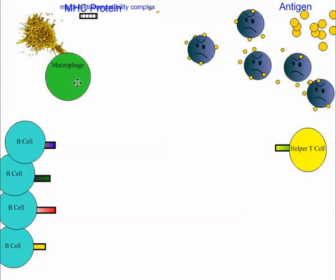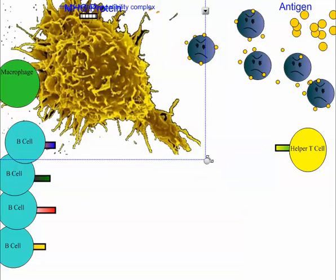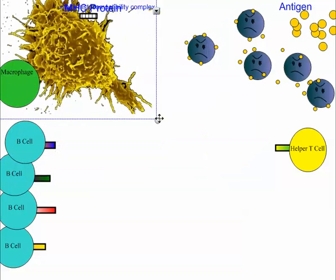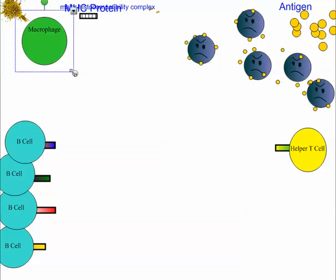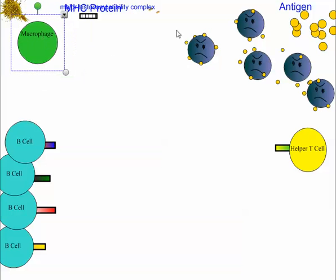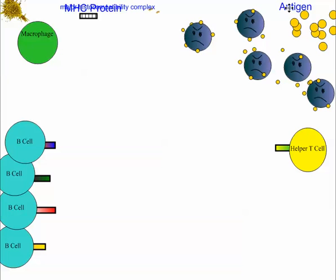This green guy here is going to represent a macrophage. Macrophages are big giant white blood cells — kind of like a pac-man that goes around and chomps things up. Here are our bad guys, the bacterial cell, and these little yellow dots are the antigens.